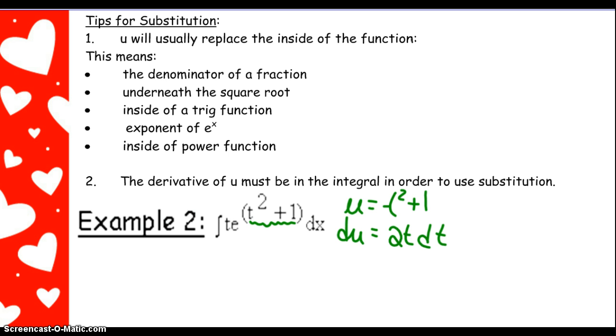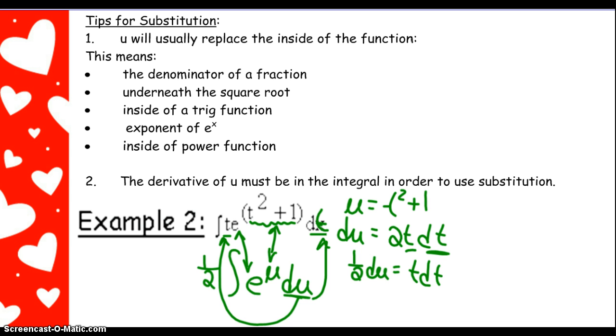I've used my u right there. There is the t that I need. There is the dt. I have a 2. I don't so much need the 2, so let's divide it over. So 1 half du equals t dt. Now I've got everything that I need. So I'm going to bring 1 half on the outside, because I can do that with constants. And then I'm going to say e to the u du. e was in both of them. u takes care of the t squared plus 1. The du takes care of the dt and the t. And since I had to divide out the 1 half, I'm going to put that on the outside so that I do not change the value.